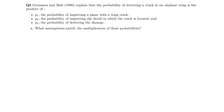The first question asks what assumptions justify the multiplication of these probabilities. Let event A be inspecting a plane with a wing crack, event B be inspecting at the right location, and event C be actually detecting the damage.